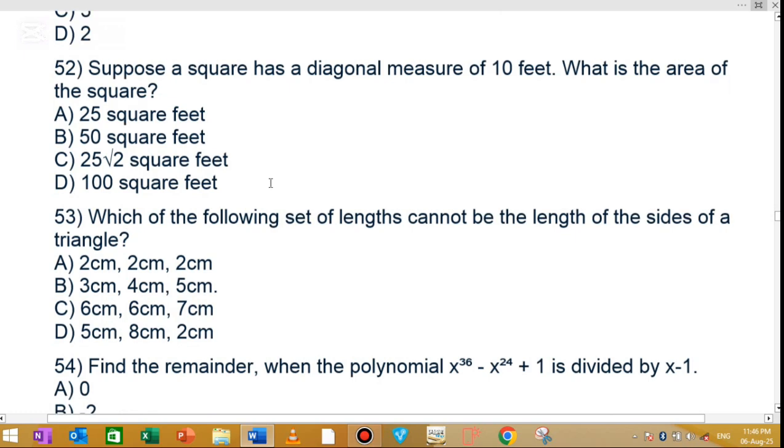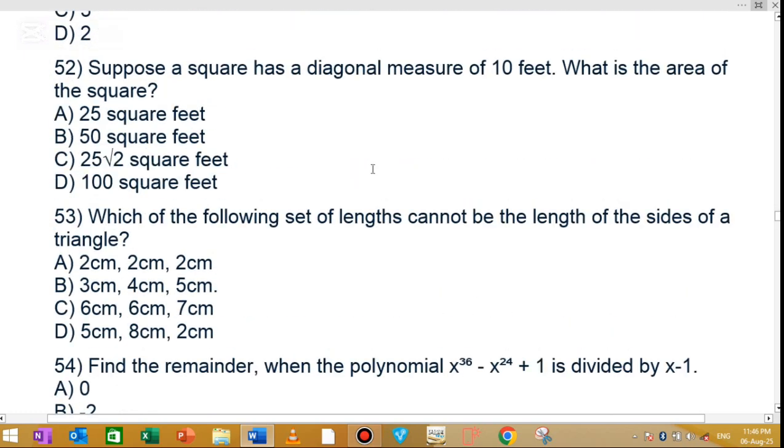Question number 52: Suppose the square has a diagonal measure of 10 feet. What is the area of the square? The square has 50 square feet. Option B is the correct answer.